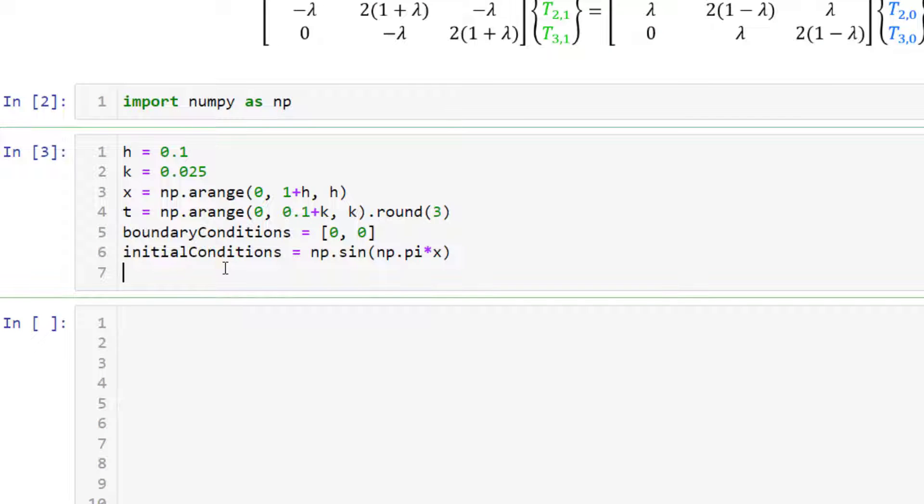So we have a sample problem that I made here. We're going to discretize it along the x direction using a step size of h. Along the time direction using a step size of k. We'll define our two boundary conditions using a list. And we'll define our initial condition based on which is supposed to be a function of x. It can be a constant as well, but it has to have as many elements as x.